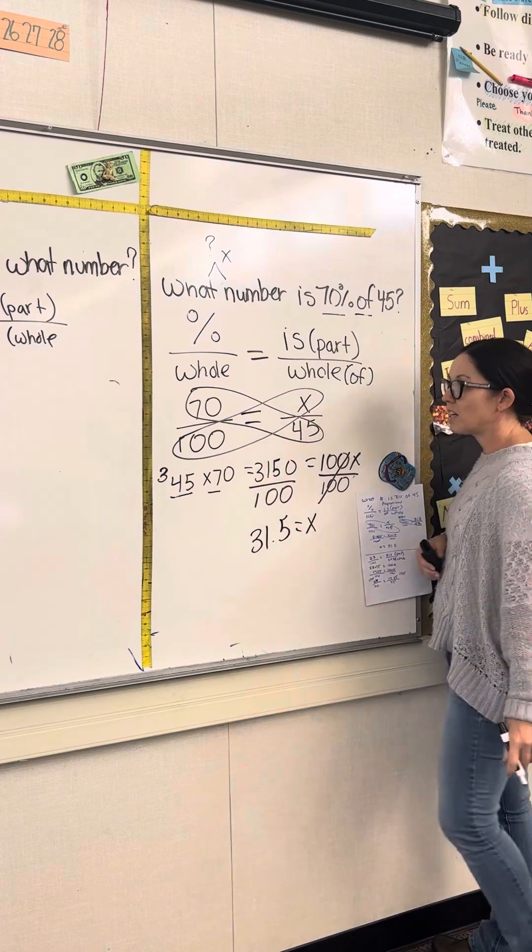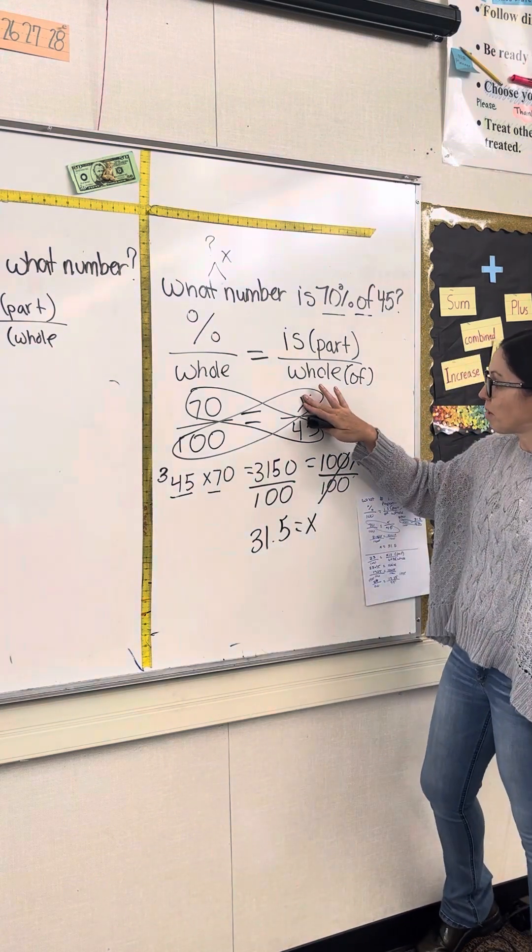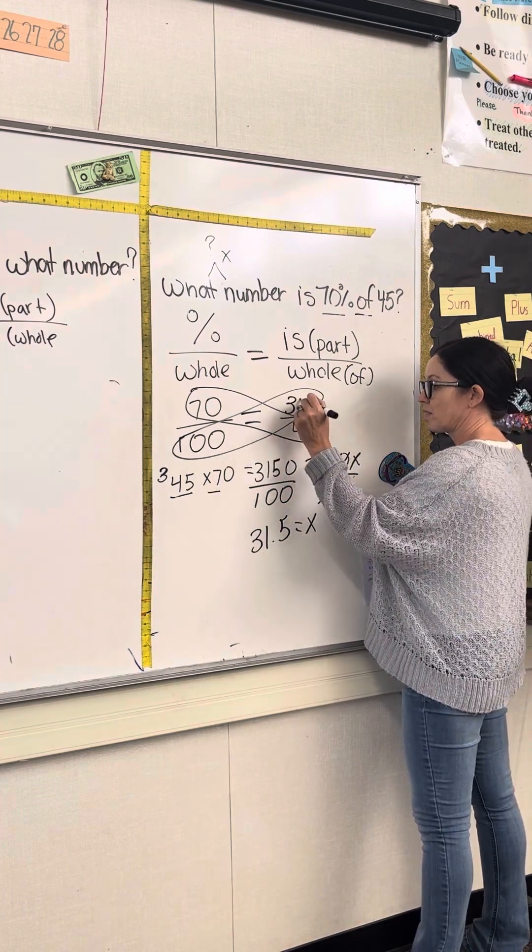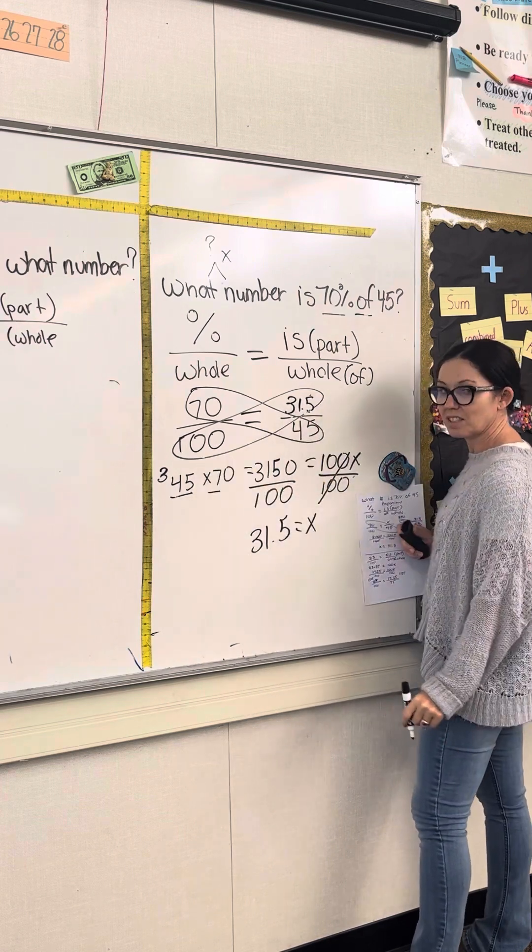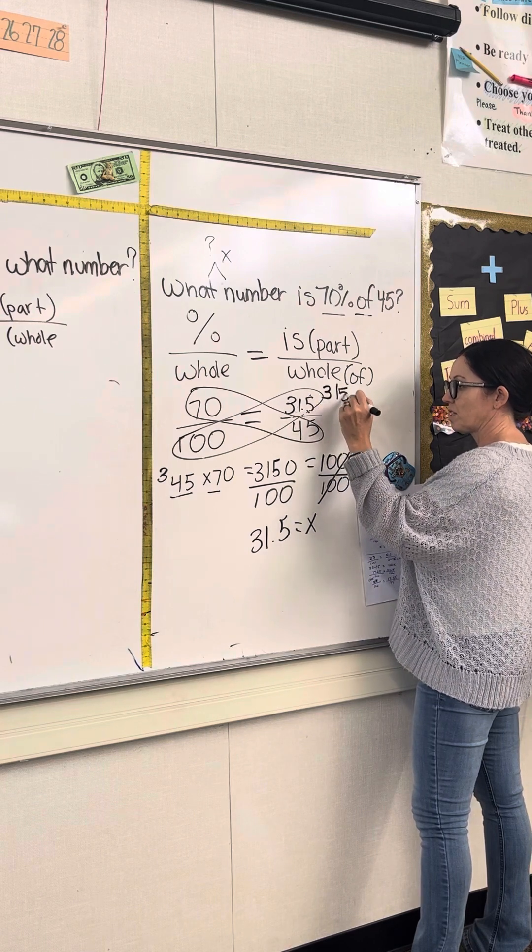You got it. Now the nice thing is now that I know what x is, I can plug in a value for x to see if this is a proportional relationship. 31.5 times 100 is 3,150. Very good.